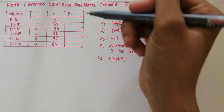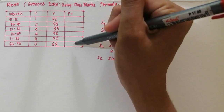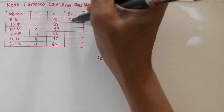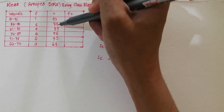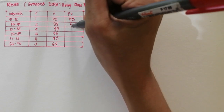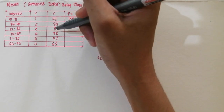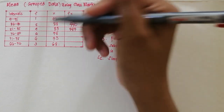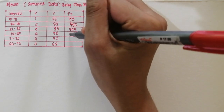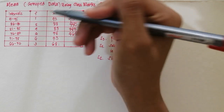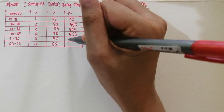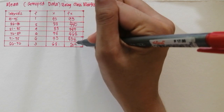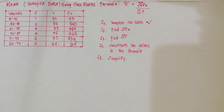Next, we find the FX by multiplying F and X: 1 times 93 is 93; 5 times 88 is 440; 9 times 83 is 747; 6 times 78 is 468; 6 times 73 is 438; and 3 times 68 is 204. We are done completing the table.